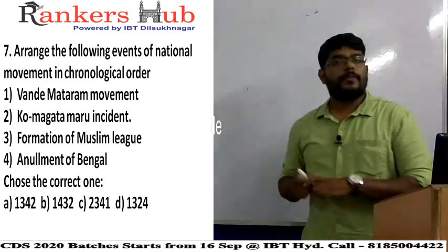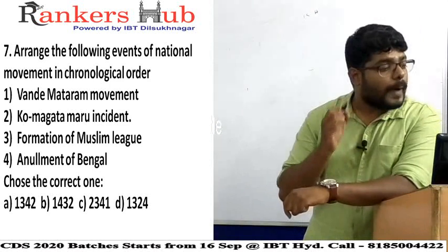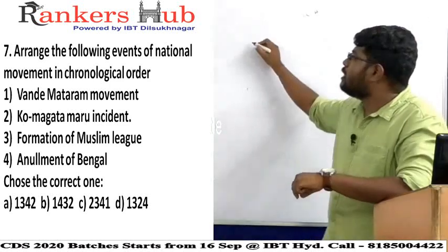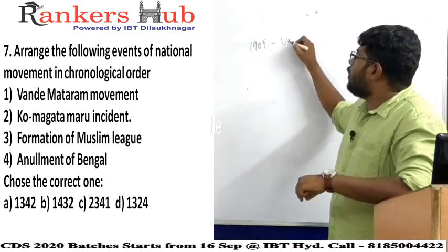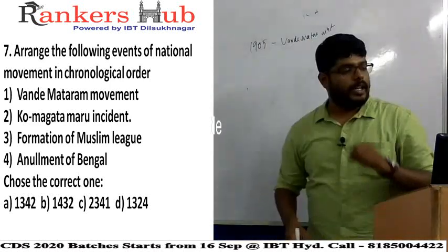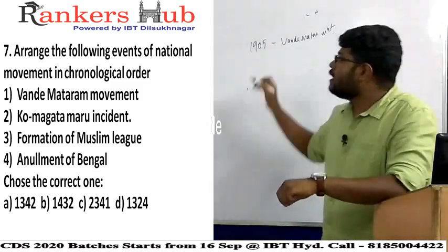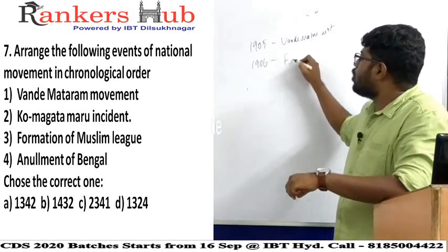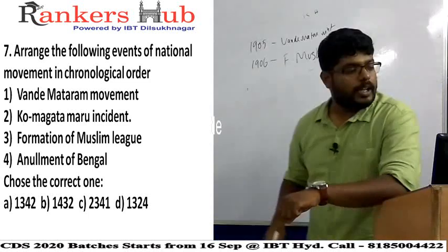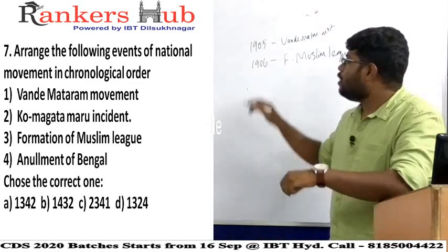Chronological order: first is the Vande Mataram Movement in 1905, because Lord Curzon gave the Partition of Bengal and against that announcement came the Vande Mataram Movement. Next, due to differences between Muslims and the Congress, in 1906 came the Formation of the Muslim League.